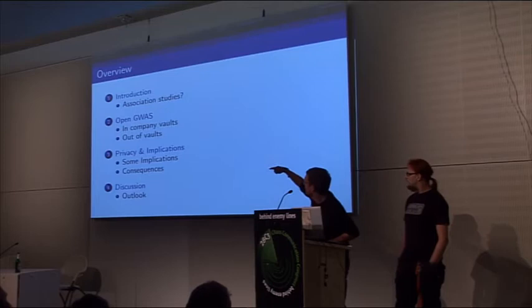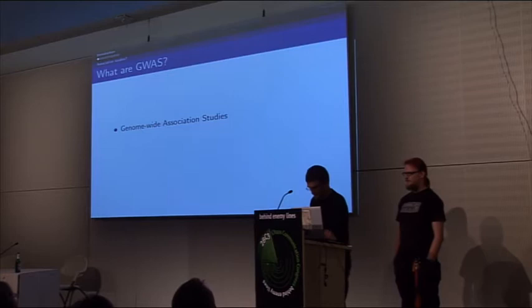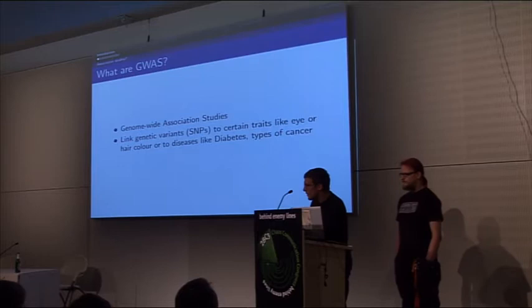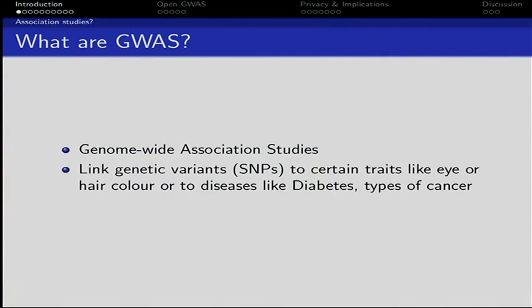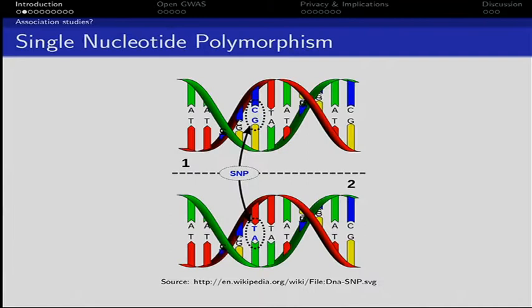What are genome-wide association studies? The purpose of genome-wide association studies is to link genetic variants — single nucleotide polymorphisms — to certain traits like eye or hair color, or even probabilities to develop diseases like diabetes or certain types of cancer.